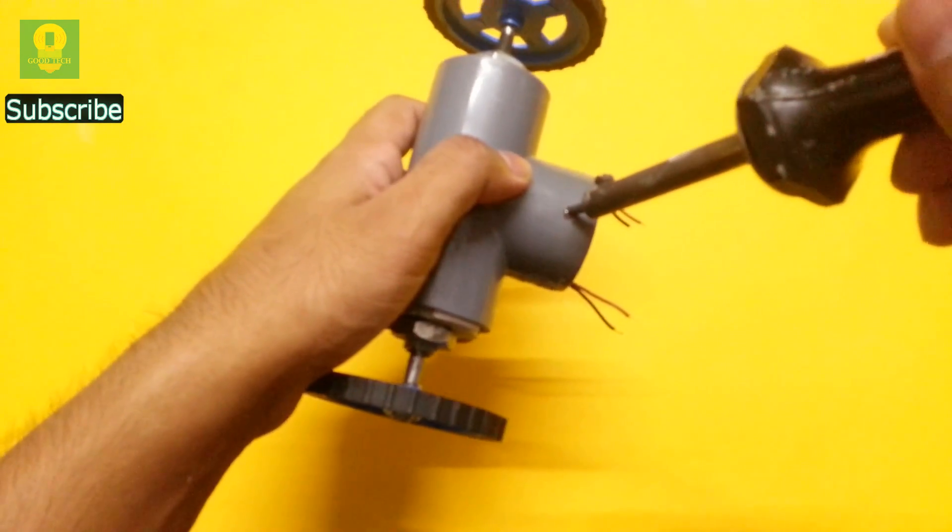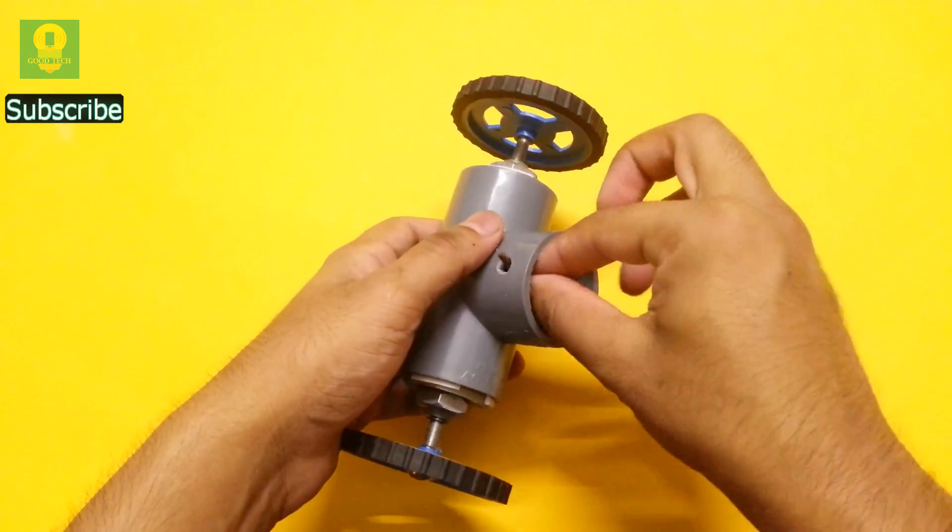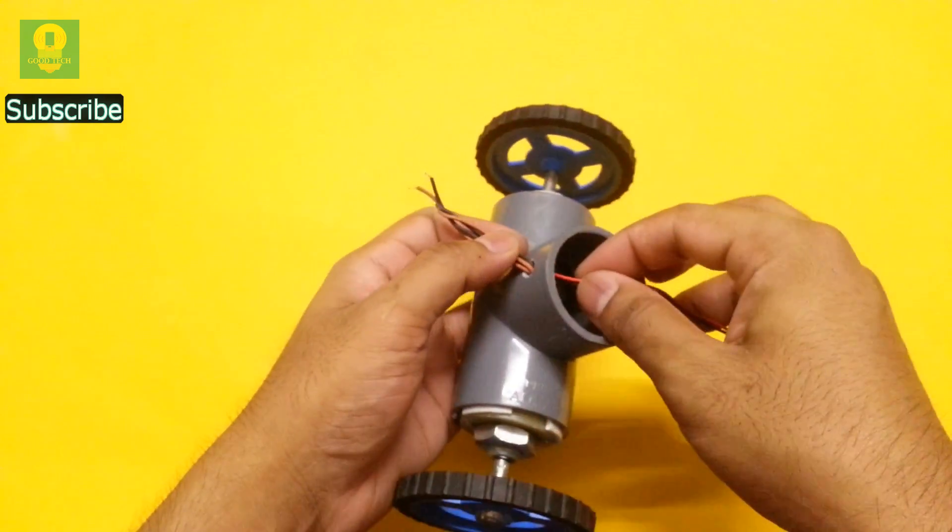Make a hole on top of the PVC tee. Insert the motor wires through the hole and also insert a 9V battery connector clip.